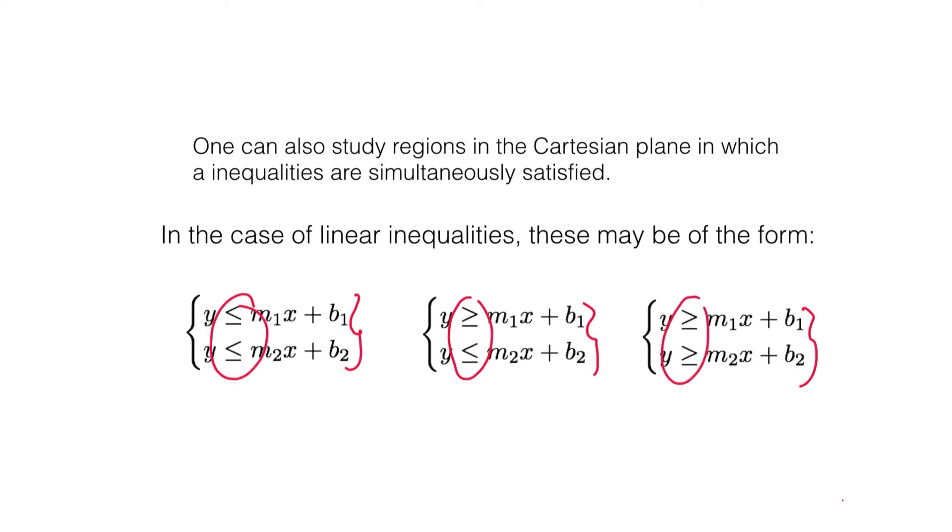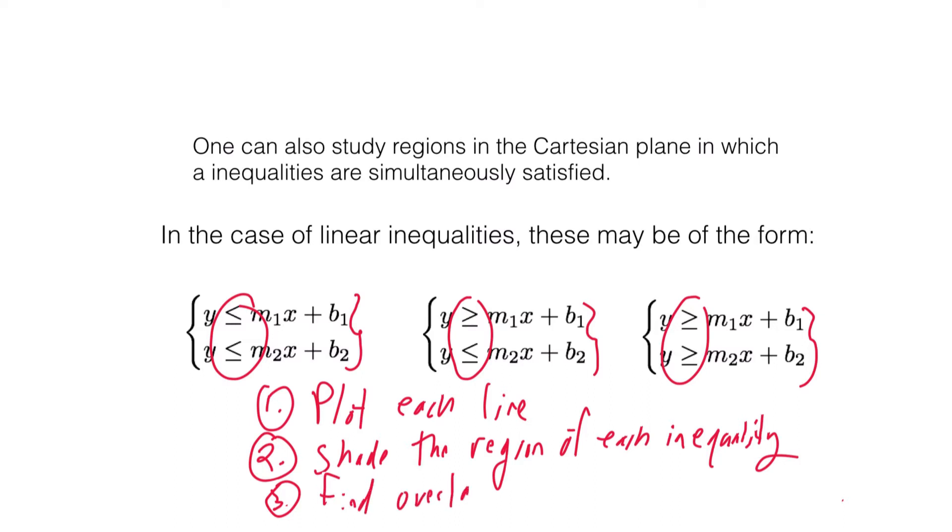So the technique that we'll follow is one, plot each line, and then on the same plot, shade the region of each inequality, and three, find the overlap in shaded regions.